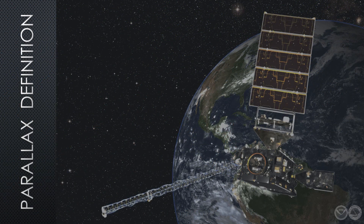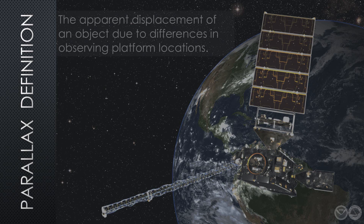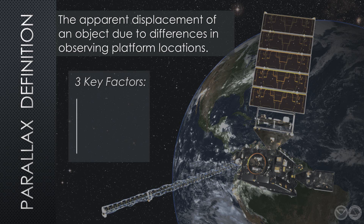Parallax is defined as the apparent displacement of an object due to differences in observing platform locations. For geostationary meteorological satellites, parallax is attributable to the angle between the satellite subpoint and the specific position of the target object. There are three factors that influence parallax associated with weather satellites in geostationary orbit: latitude, longitude, and the height of the feature above the Earth's surface.